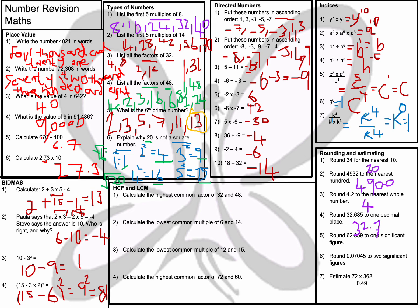Question number 5: round 62,359 to one significant figure. The 6 is my first significant figure, and the 2 rounds it down, so the answer is 60,000. Question number 6: round this decimal to two significant figures — looking at the third digit which is 4, so the answer is 0.070. The idea of significant figures is that it's the first non-zero number, and then the rest are zeros afterwards when you round.